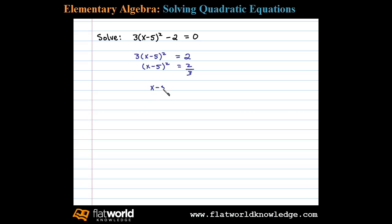Don't forget the plus or minus. We'll be left with x - 5 = ±√(2/3). Now simplifying the right side, we have ±√2/√3.